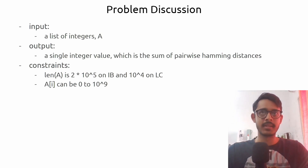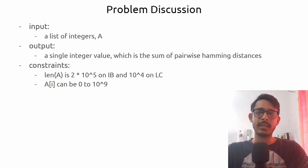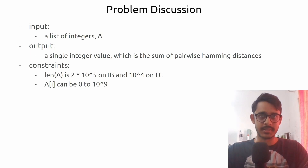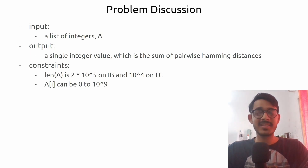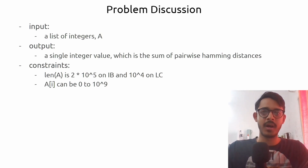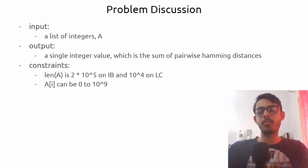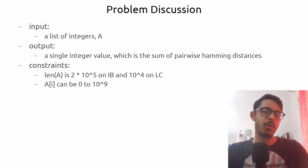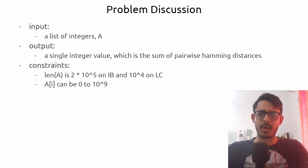Before we get started with the solution, let's talk about the problem statement. We're given a list of integers as the input, and the goal of this problem is to return a single integer value — the sum of pairwise hamming distances between all of the integer values present in the input array.